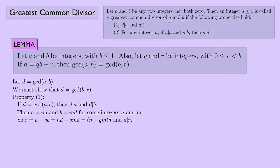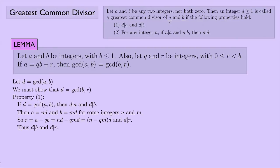So R, which we can write as A minus QB — rearranging — equals ND, because that's what A was, minus Q times MD, because MD is what B was. I can factor out the D, and this thing here, N minus QM, is itself an integer. So if I have R equaling an integer times D, that shows that D divides R. I have D divides B because D is the greatest common divisor of A and B, and I just showed D divides R — that takes care of property one.